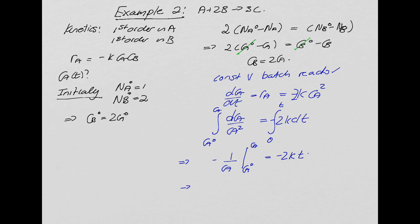So that becomes 1 over Ca0 minus 1 over Ca is equal to minus 2 Kt, and there we have our answer as how Ca changes with time.